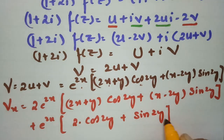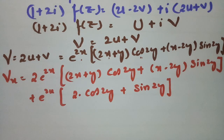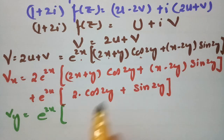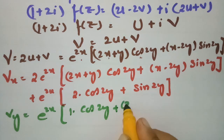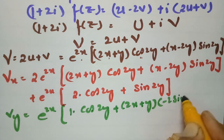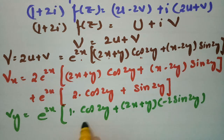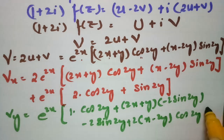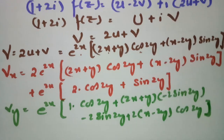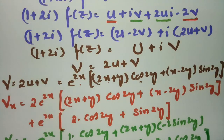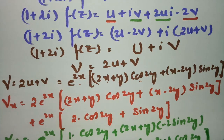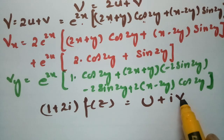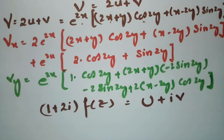Now differentiating with respect to y, V_y = e^(2x)·[1·cos(2y) + (2x + y)·(-2sin(2y)) + (-2)sin(2y) + (x - 2y)·2cos(2y)]. So V_y = e^(2x)·[cos(2y) - 2(2x + y)sin(2y) - 2sin(2y) + 2(x - 2y)cos(2y)].